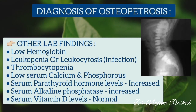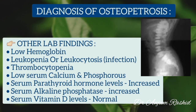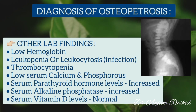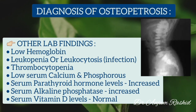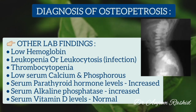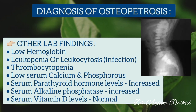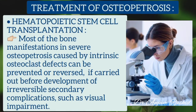Other lab findings in osteopetrosis include low hemoglobin, leukopenia or leukocytosis, thrombocytopenia, and low serum calcium and phosphorus levels. Serum parathyroid hormone level and alkaline phosphatase level are increased. Serum vitamin D level is normal.